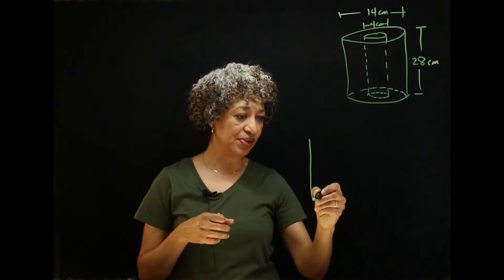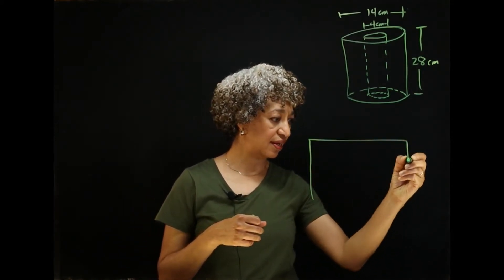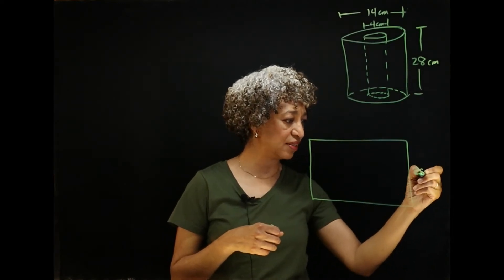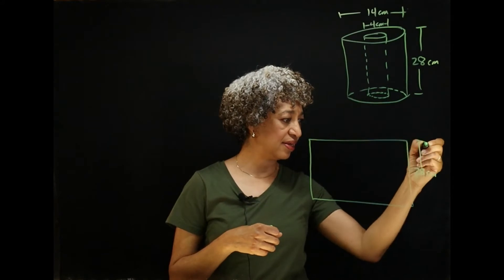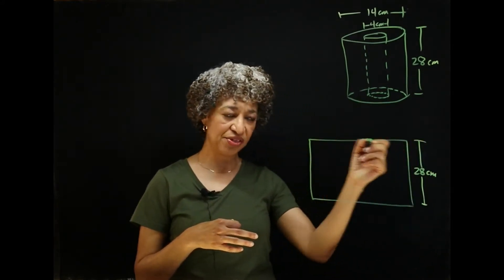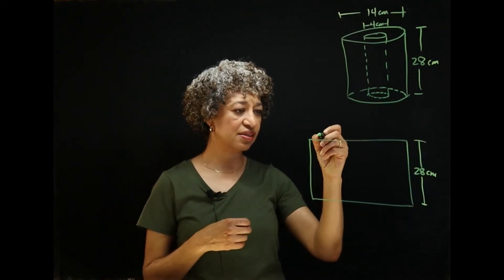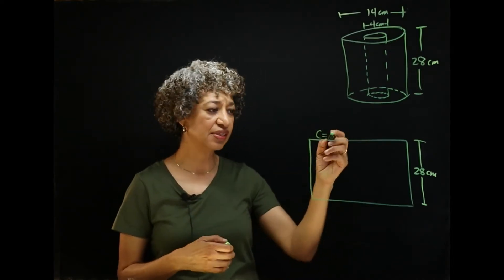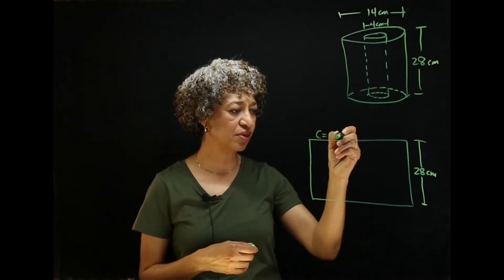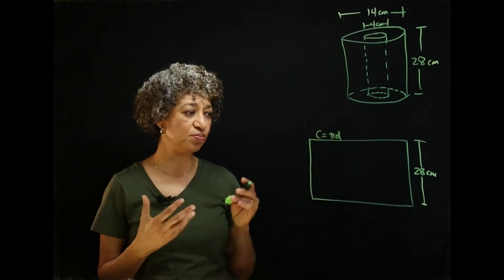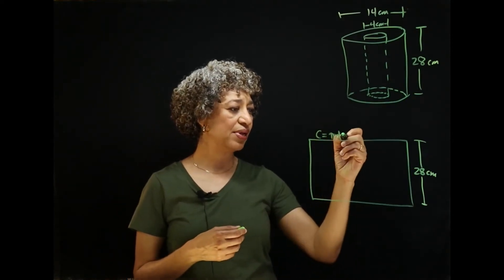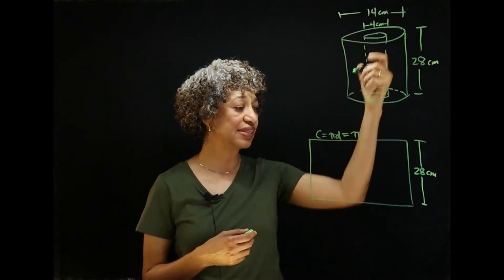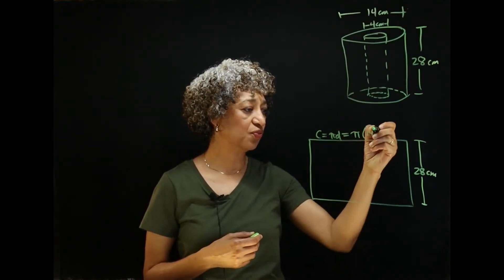So, let me draw that for you. We have this rectangle. The height is 28 centimeters. And the width here is the circumference of that larger circle. Circumference is pi times the diameter. Or if we had a radius, it would be 2 pi times the radius. But we have a diameter. So, our circumference is pi times 14. Or 14 pi.